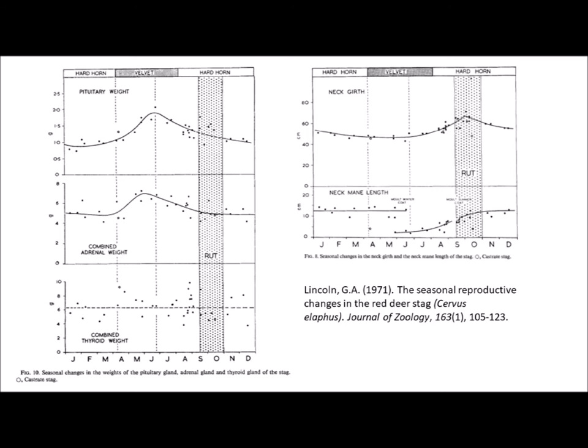What this graph shows from the same paper is changes in pituitary, adrenal and thyroid weight, as well as the girth of the stag's neck and the mane length — the shaggy hairs that grow on the stag's neck in and out of the rut. You can see there are changes in how adrenal activity prepares the animal for the rut, as well as how the changes to morphology — the size and shape of the stag's neck — occur during the rut itself.